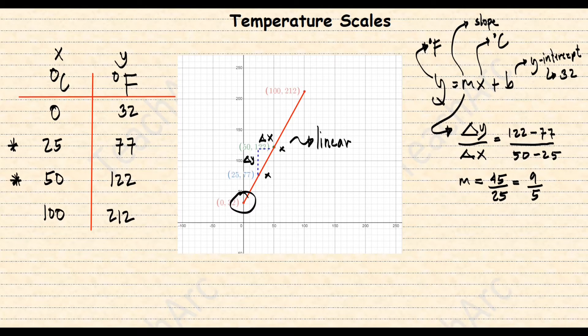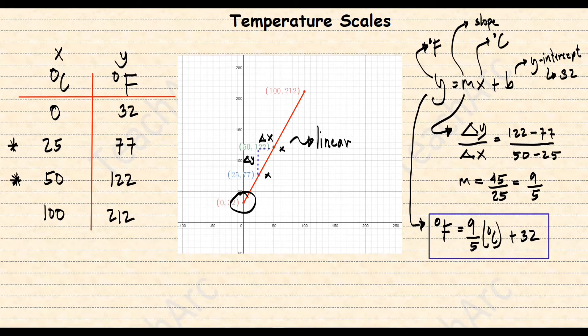Now, if we plug this in the linear equation, you will get degrees Fahrenheit which is your Y is equal to 9 over 5 which is your slope times degrees Celsius represented by X plus the Y-intercept which is 32. And that's your famous degrees Fahrenheit to degrees Celsius conversion formula.